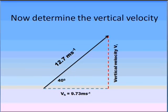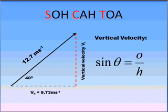Our next step is to now determine the vertical velocity. We use the same steps as before, but instead of using cosine, we want to use sine, because in this case we have got the opposite side, the vertical velocity, and the horizontal side, the 12.7 ms.